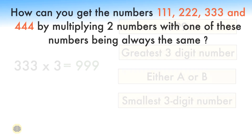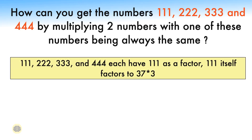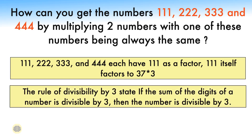There is a similar question which states: how can you get the numbers 111, 222, 333, and 444 by multiplying two numbers, with one of these numbers being always the same? You can pause and try before checking the solution. So 111, 222, 333, and 444 each have 111 as a factor. 111 itself factors to 37 times 3. We knew it was divisible by 3 because its digits sum to 3. The rule of divisibility by 3 states: if the sum of the digits of a number is divisible by 3, then the number is divisible by 3.